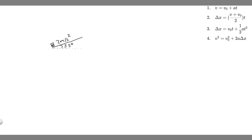In this problem, we're told that starting from rest, a car accelerates at 2 meters per second squared up a hill that is inclined 5.5 degrees above the horizontal. How far horizontally and vertically has the car traveled in 12 seconds?